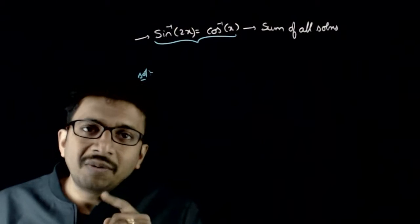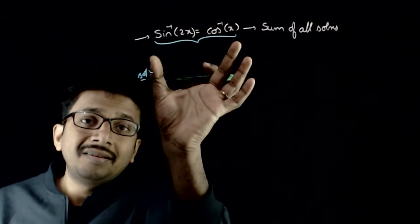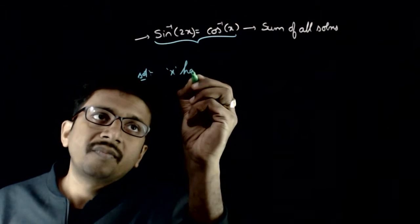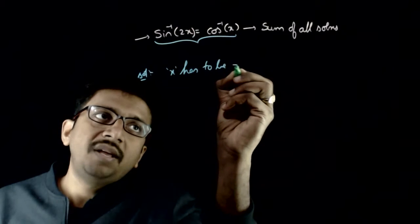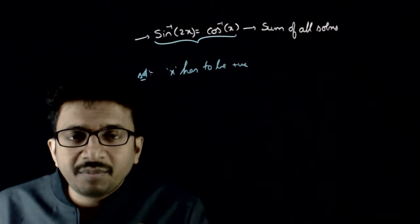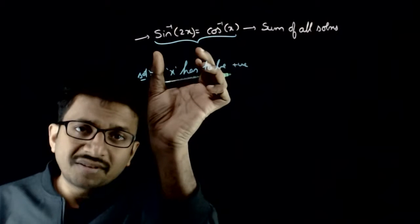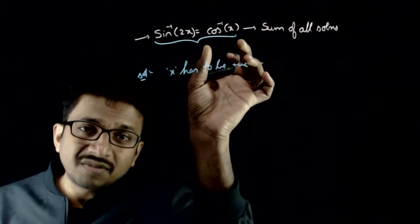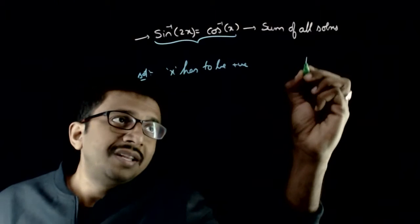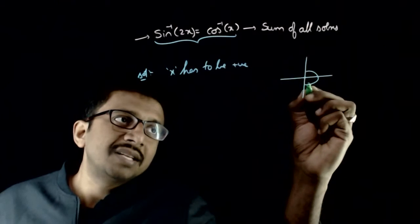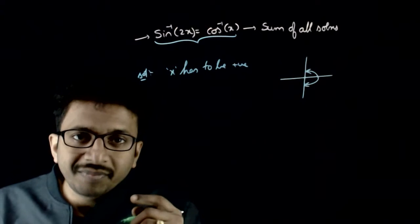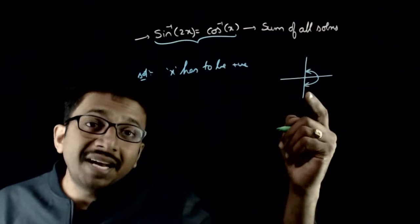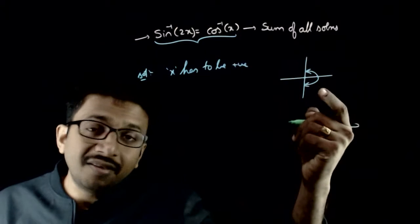The first thing to observe is that x has to be positive. If x is negative, sine inverse of 2x is an angle in the fourth quadrant. We know that the range of sine inverse x is minus pi by 2 to pi by 2 — if a positive number goes inside sine inverse, you get an angle in the first quadrant; if a negative number goes inside, you get an angle in the fourth quadrant.